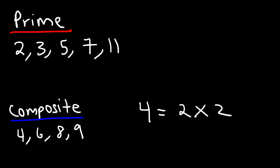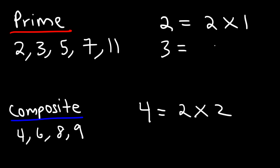On the other hand, the only factors of a prime number are the number itself and 1. For example, the reason why 2 is prime is because the only factors of 2 are 2 and 1. The reason why 3 is prime is because the only factors are 3 and 1. The same is true for 5 — the only two whole numbers that multiply to 5 are 5 and 1.